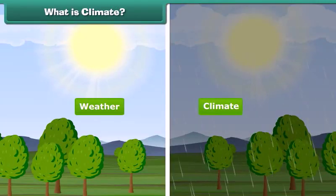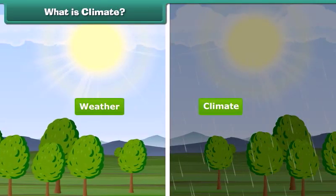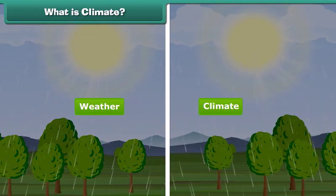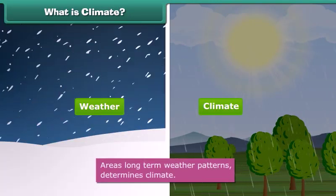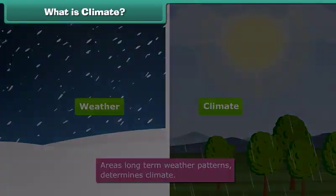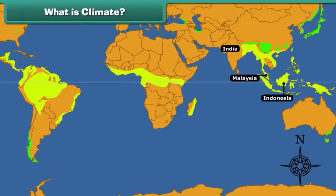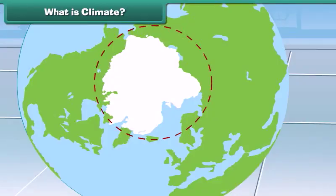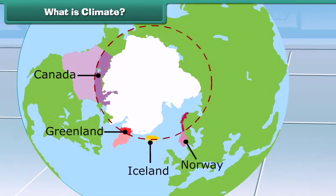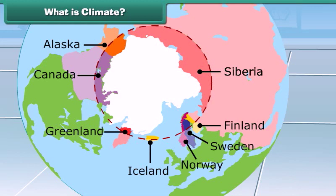Is weather and climate the same? No. An area's long-term weather patterns determine its climate. For example, areas near the equator have a warm climate and the areas near the poles have a much colder climate. So children, now you can easily differentiate weather from climate.